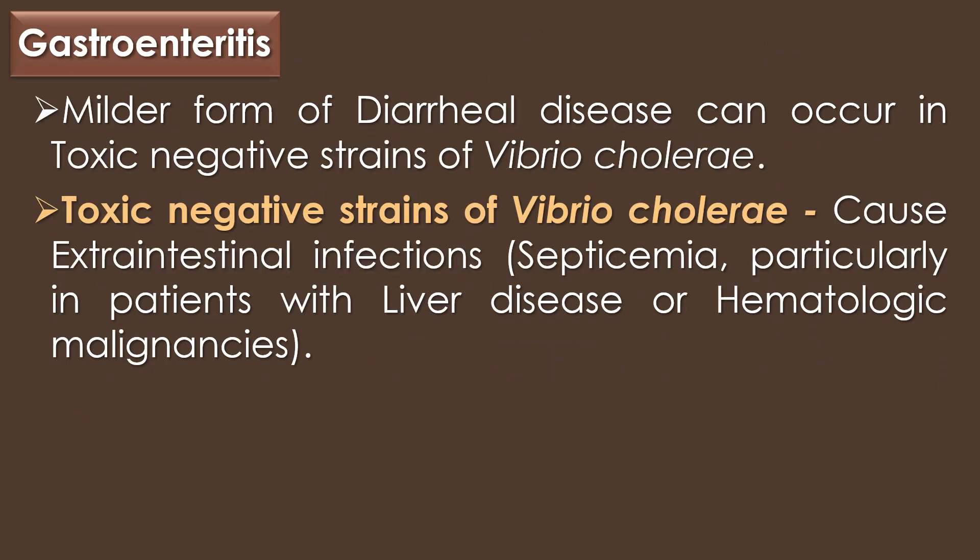The second clinical disease caused by Vibrio cholerae is gastroenteritis. Vibrio cholerae causes gastroenteritis, which is observed as a milder form of diarrheal disease, and it can occur in toxin-negative strains of Vibrio cholerae. Toxin-negative strains of Vibrio cholerae can also cause extra-intestinal infections such as septicemia, particularly in patients with liver diseases or hematologic malignancies.